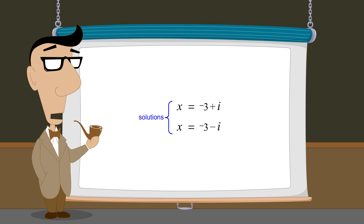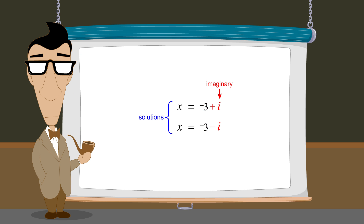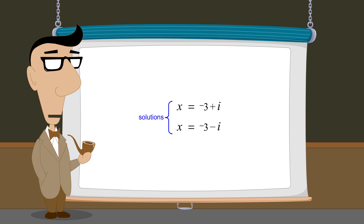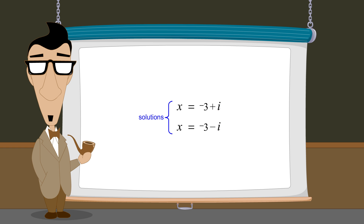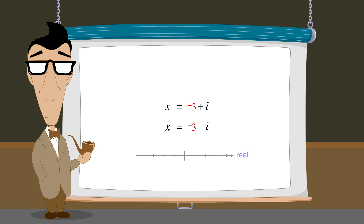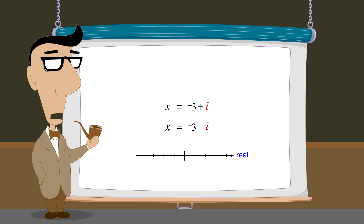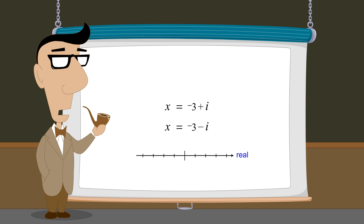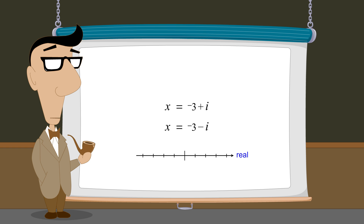Each of these solutions contains a real part and an imaginary part. So how can we represent these values of x graphically? Real values can be represented as a point on the number line. But i is fundamentally different from any real number, and every point on the number line is already assigned to a real number. We need some way of representing i that doesn't involve allocating a position on the real number line.